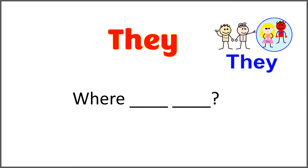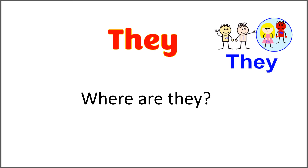The given word in this sentence is 'they,' and the sentence is 'where, blank, blank.' Use 'they' with 'are' to complete the sentence. Where are they?